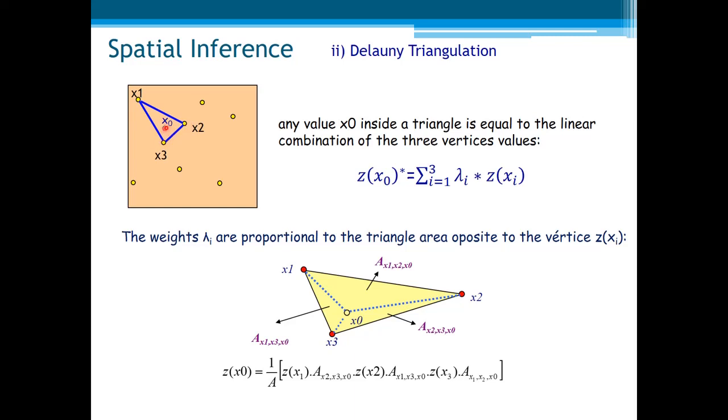Okay, let us move to a little bit more complex estimator, that accounts for the three neighborhood samples. If we divide the space in triangles, Delaunay triangulation, it is called, each vertex is defined by one sample value, like this one here. So, any value, an unknown value x0, inside the triangle, is equal to the linear combination of the three vertex values. Now, one way to calculate the weights, those lambdas, here, is this one. The weights, λi, are proportional to the triangle area, opposite to the vertex z(xi). For example, the weight of this sample, x3, will be proportional to this area, here, of this triangle. The weight of x2, this triangle here, and so on. So, the advantages of this method, it sounds the same as the previous one. Simplicity of implementation, but the drawbacks are identically the same. High discontinuity between polygons, in this case, between triangles.